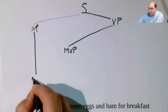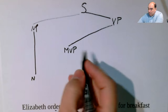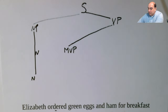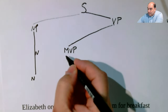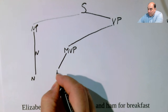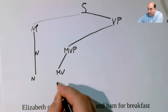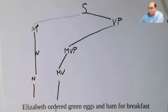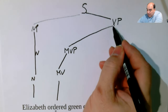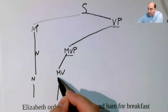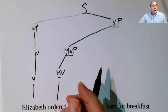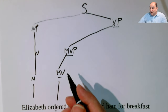Your noun phrase only includes a noun, and that's it — you're done with this. Your main verb phrase I'm going to break down again, and that's going to include your main verb. That's just the word 'ordered.' Now, this structure — verb phrase, main verb phrase, main verb — is always going to be in every sentence. You may have other parts that are connected to it, but it's always going to be that way.